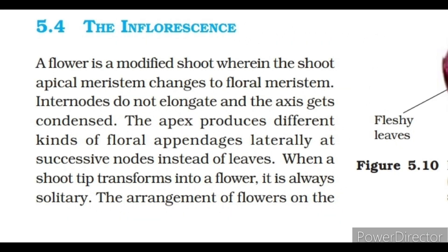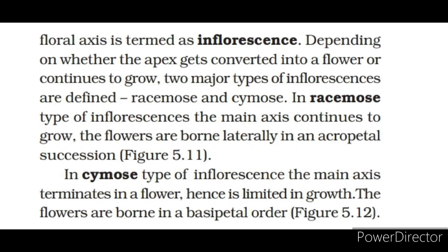The inflorescence. A flower is a modified shoot wherein the shoot apical meristem changes to floral meristem. Internodes do not elongate and the axis gets condensed. The apex produces different kinds of floral appendages laterally at successive nodes instead of leaves. When a shoot tip transforms into a flower, it is always solitary. The arrangement of flowers on the floral axis is termed as inflorescence. Depending on whether the apex gets converted into a flower or continues to grow, two major types of inflorescences are defined: racemose and cymose. In racemose inflorescence, the main axis continues to grow and flowers are borne laterally in acropetal succession. In cymose inflorescence, the main axis terminates in a flower, hence is limited in growth, and flowers are borne in a basipetal order.